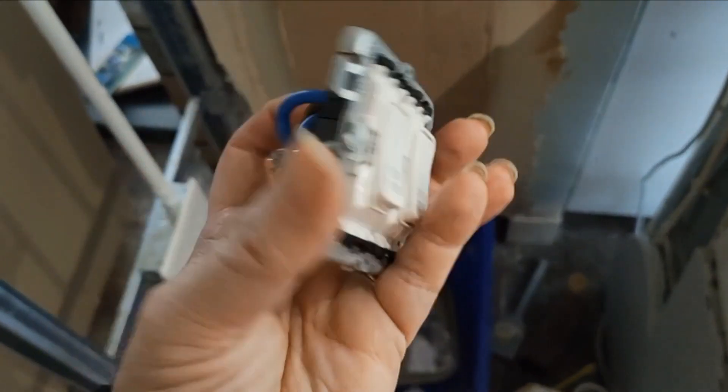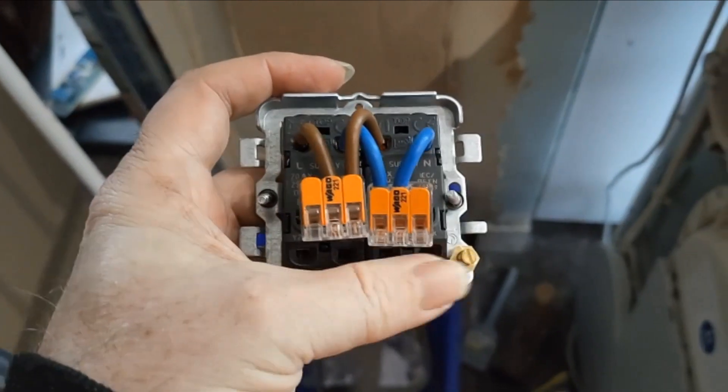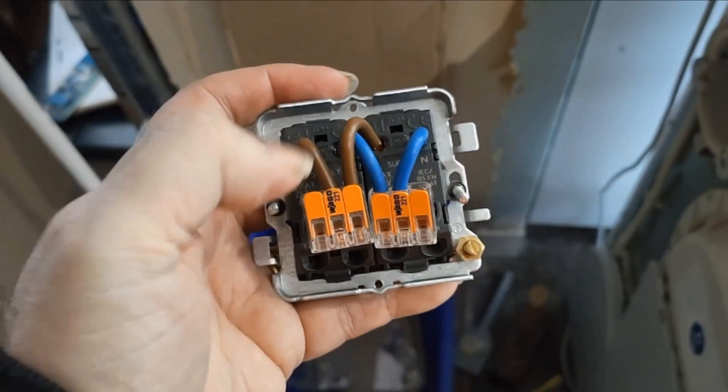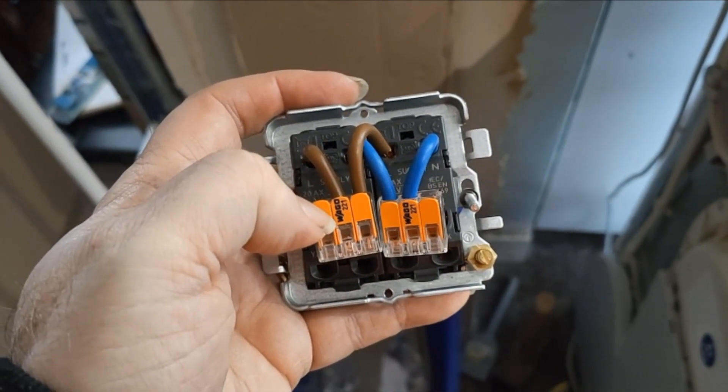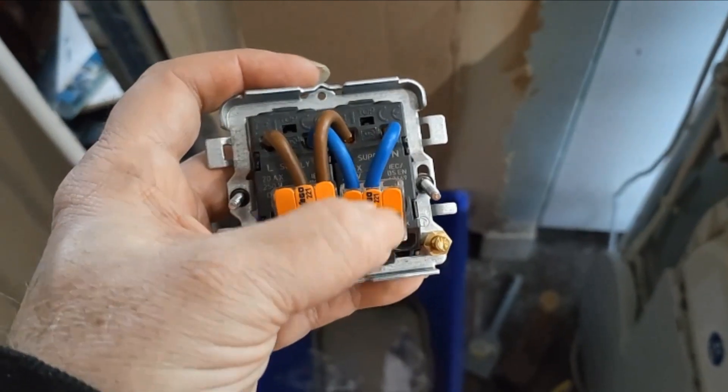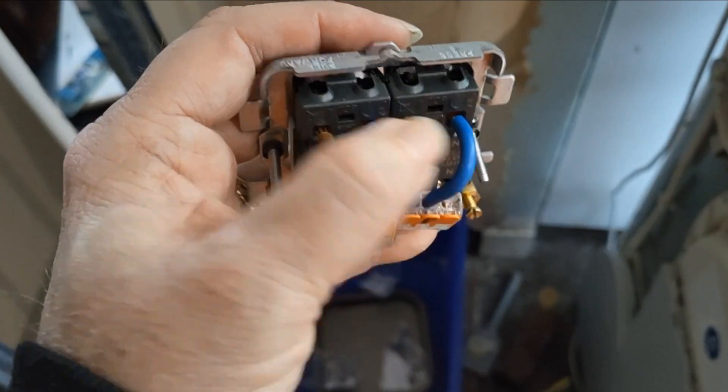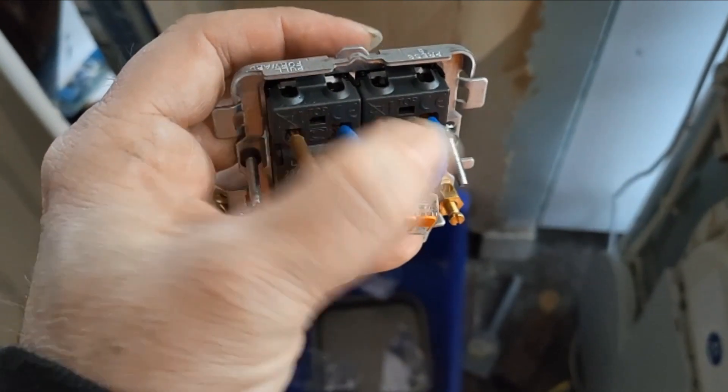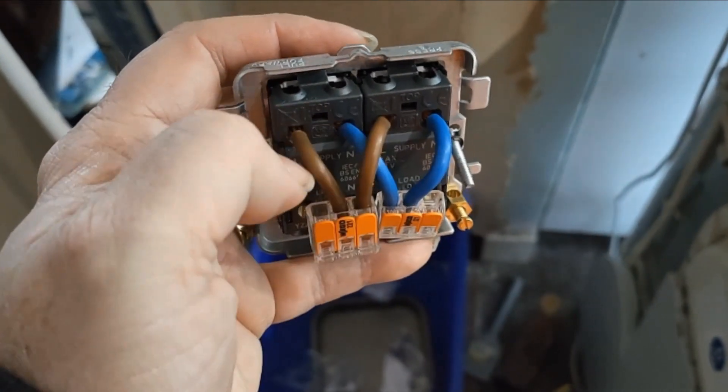So what I've come up with is this. The main supply cable will come into this WAGO here for the line and the neutral from the supply will come into there. As you can see, I've then connected those neutral into neutral, line to line to both switches.